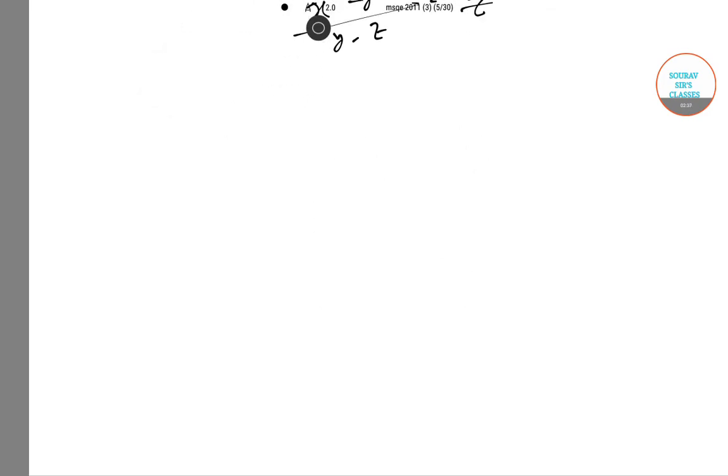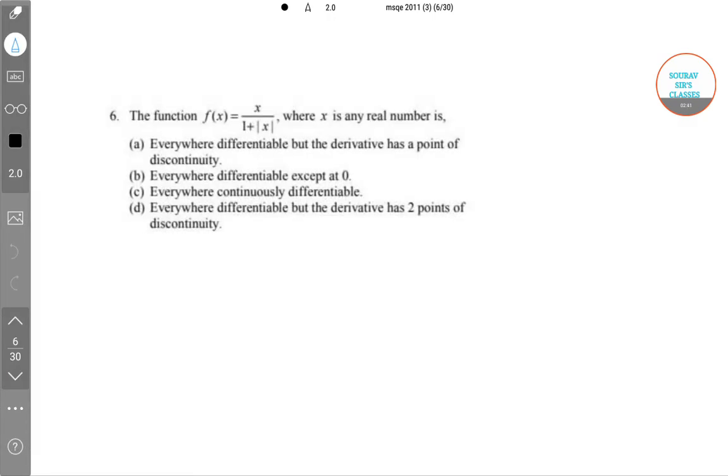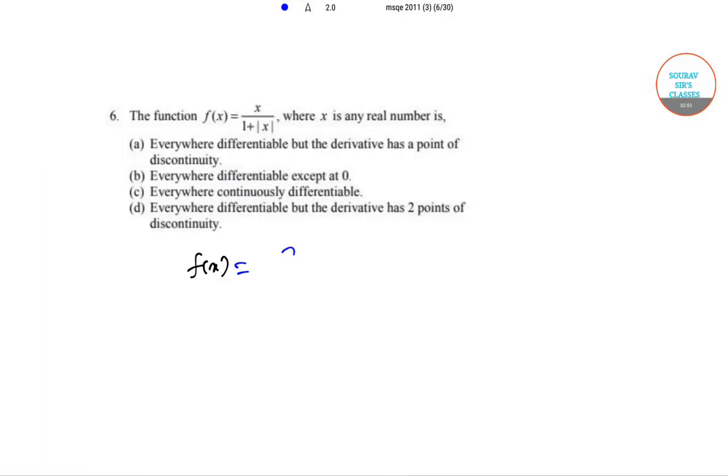Next is a functional question. Here f(x) equals x/(1+|x|). So simply this has two values. Let me change the color, it will become monotonous with the same color. So if x equals x/(1-x) and x/(1+x), this is when x is negative, this is when x is positive.